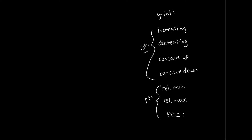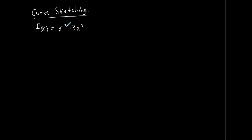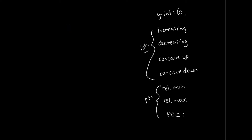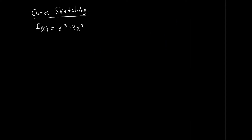Let's find the y-intercept because that's just basic algebra. A y-intercept is a point where the x-coordinate is zero. So if I want a y-intercept, I'm going to plug in zero for x. Zero to the third plus three times zero squared gives me zero. So this y-intercept just happens to be the origin. Now let's go into these intervals and these special points.